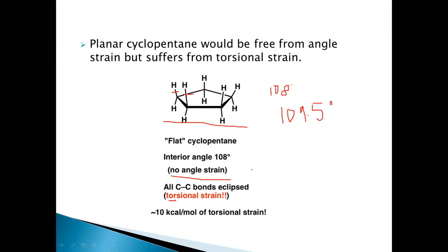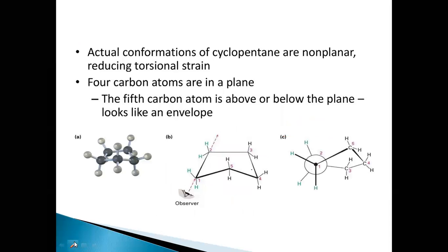So if the hydrogens on the adjacent carbon atoms are in eclipsed position, they are facing torsional strain. There is no angle strain, but there is lots of torsional strain as the hydrogen atoms on the carbon atoms are in eclipsed conformation. There is 10 kilocalories per mole of torsional strain, which means a lot.